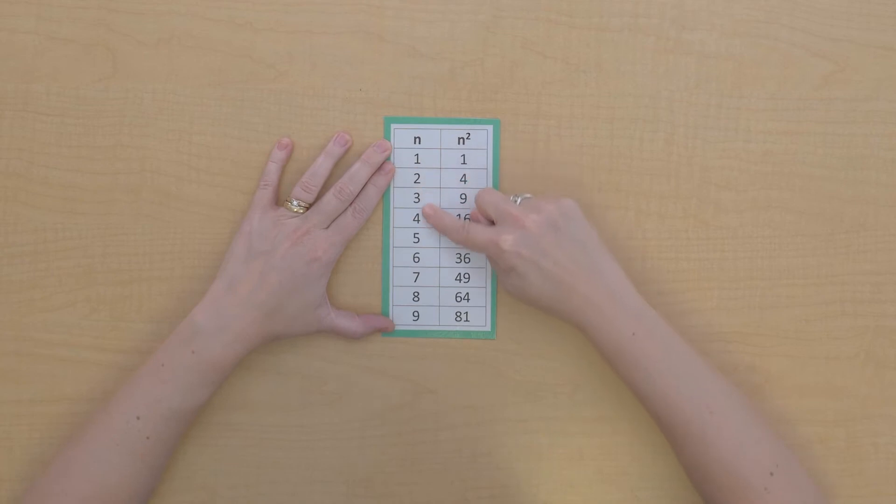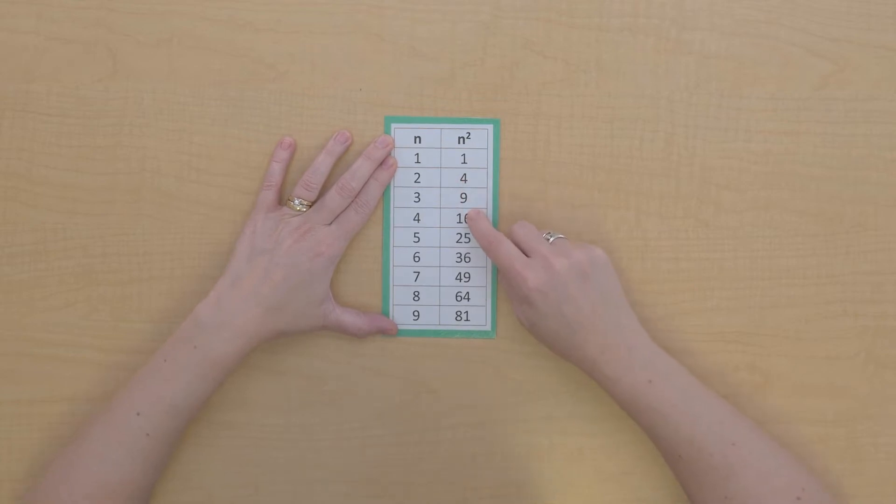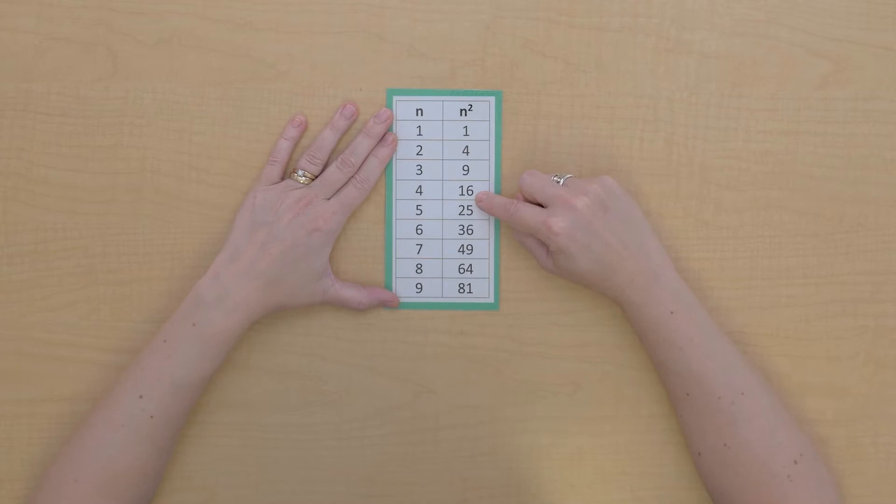This chart has a list of the numbers 1 to 9 and then the values of those numbers squared. What I can see here is that for the first three numbers when we square it the value is a single digit, but beyond that from 4 through 9 the value of the square takes up two digits, two categories.